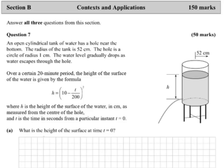Going straight to part A, we can see the examiner is getting us started by asking for the height h at time t equals zero. Here you can see a key technique: converting English language to maths language. He's looking for a height, which we call h, and a time, which we call t. You can see straight away there's an equation connecting h and t further up, so it should be fairly obvious what to do — we've got the equation and a value for t, so we substitute in to find h.